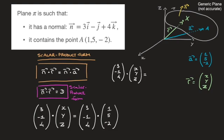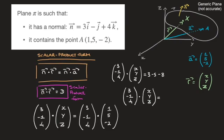All we need to do to write this in scalar product form is calculate the dot product on the right-hand side. That is 3 times 1, which is 3, plus negative 1 times 5, giving negative 5, plus 4 times negative 2, giving minus 8. So 3 minus 5 minus 8 equals negative 10. Therefore the scalar product form of this plane's equation is: (3, negative 1, 4) · (x, y, z) = negative 10.